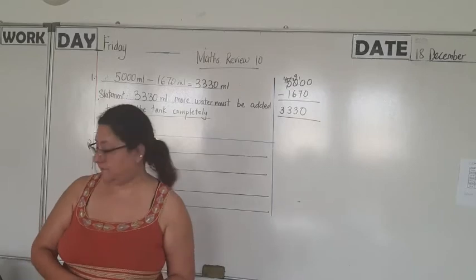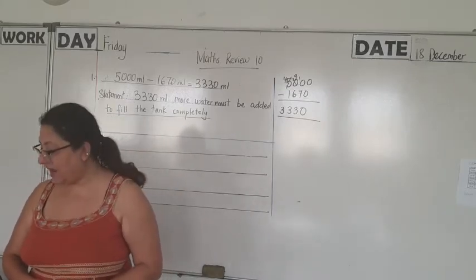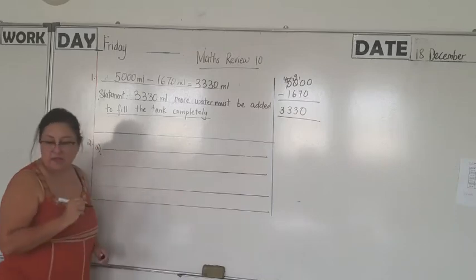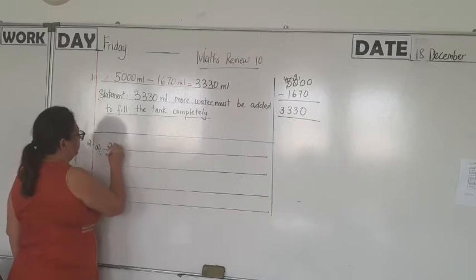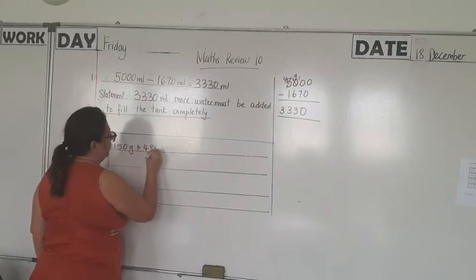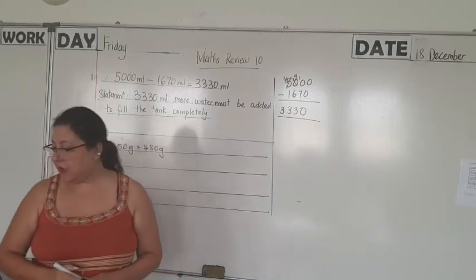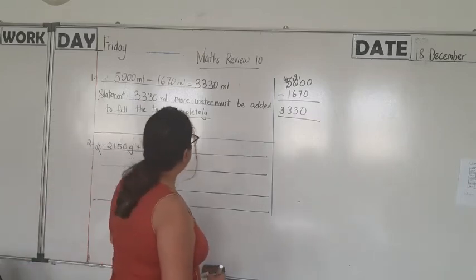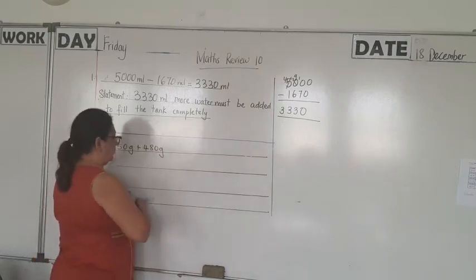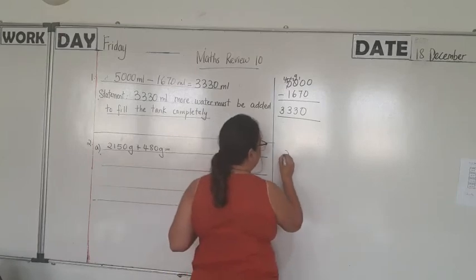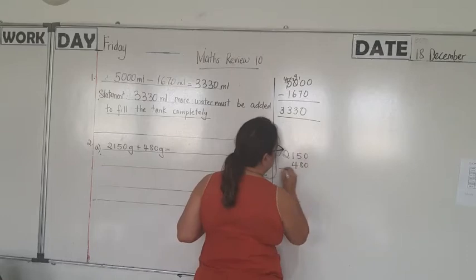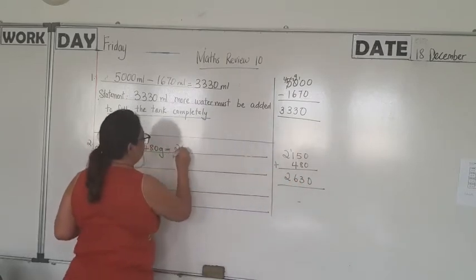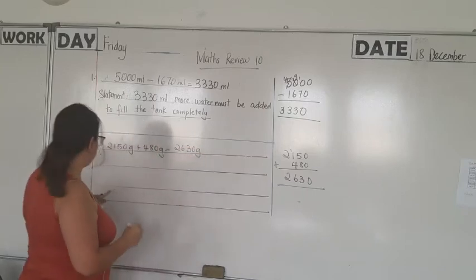John's bag is 2150 grams. Paul's bag is 480 grams heavier than John's, so we need to find Paul's bag. That means we add: 2150 grams plus 480 grams, because Paul's bag is heavier. The answer is 2630 grams.